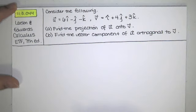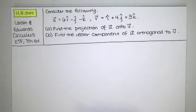We're given two vectors, u and v, in three-dimensional space, and we're asked to find the projection of u onto v and to find the vector component of u orthogonal to v.